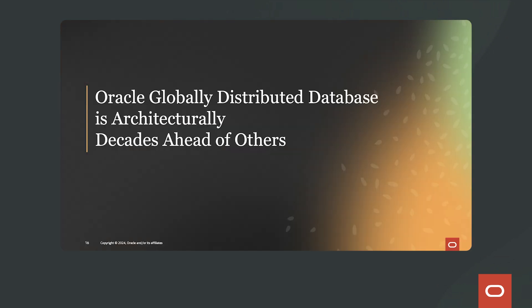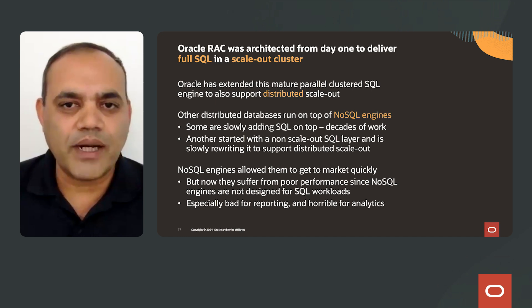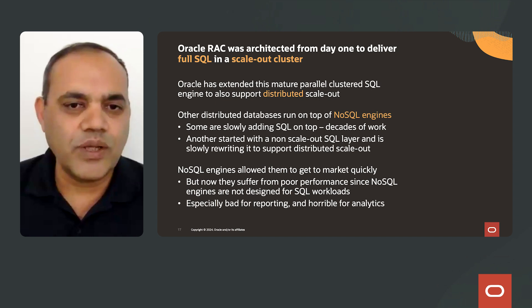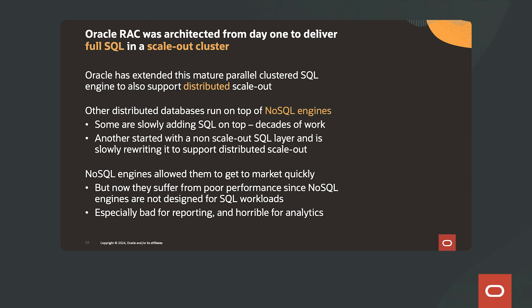Oracle's globally distributed database is architecturally ahead of others. Oracle RAC was architected from day one to deliver full SQL in a scale-out cluster, and Oracle has extended this mature parallel-clustered SQL engine to support distributed scale-out architecture. Other distributed databases run on top of NoSQL engines, and some are slowly adding SQL on top, which would require decades of work. NoSQL engines allowed them to get to market quickly, but they now suffer from poor performance since NoSQL engines are not designed for SQL workloads — especially bad for reporting and analytics queries.